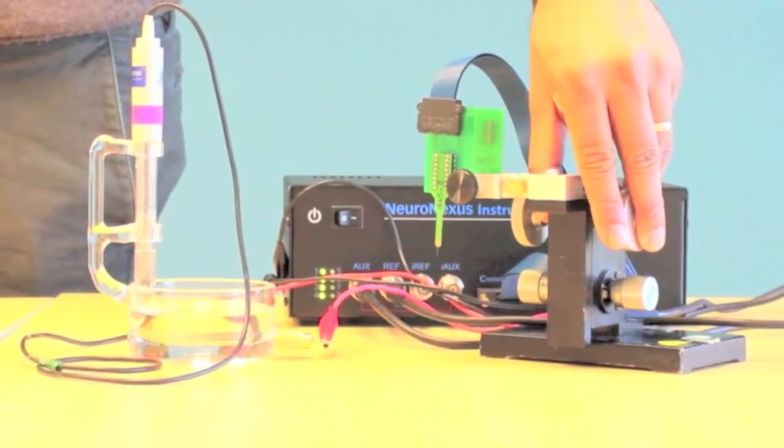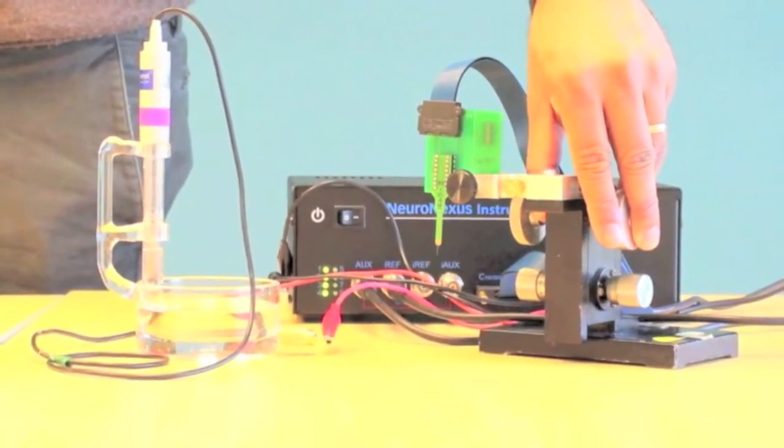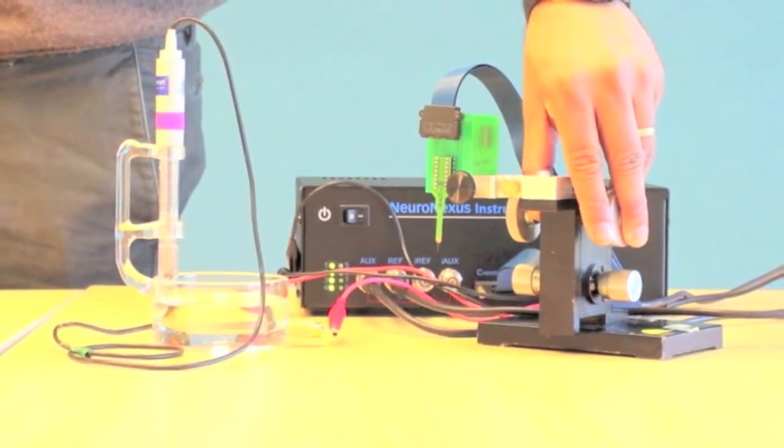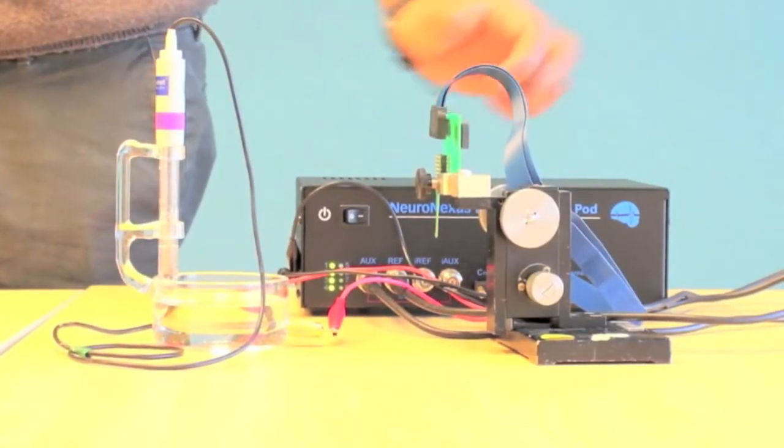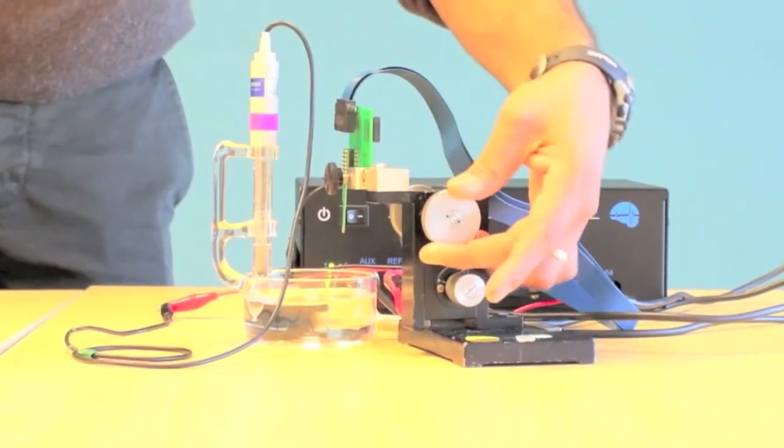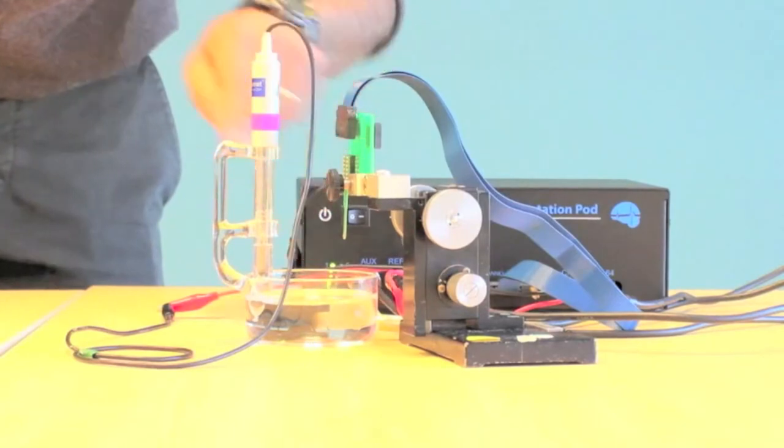Fill the glass dish with electrolyte solution. Neuronexus recommends using 0.1x PBS. Connect the blue cable to the probe adapter and plug in the probe. You may mount the adapter to a manipulator to lower the probe into the dish and you're ready to begin.